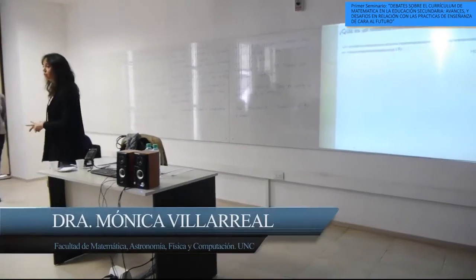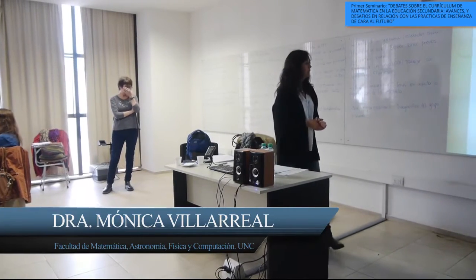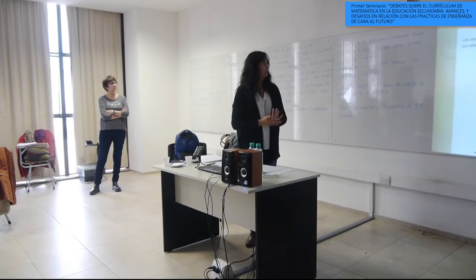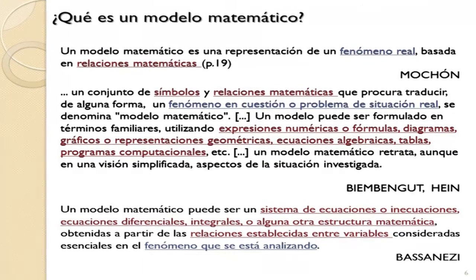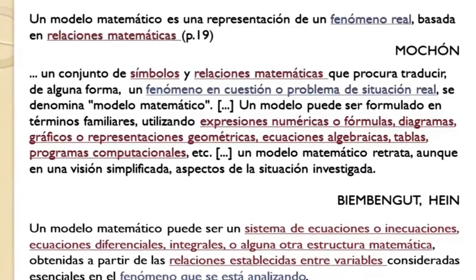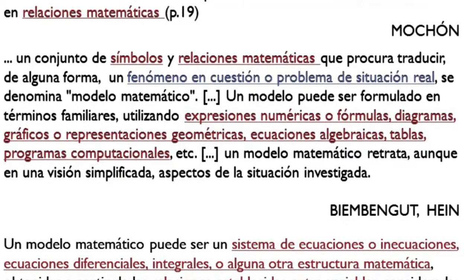Vamos a presentar tres definiciones y mirar cuáles son los elementos que aparecen. Una primera definición de Simón Moachón, autor mexicano, dice que un modelo matemático es una representación de un fenómeno real basada en relaciones matemáticas. La segunda definición, de dos educadores matemáticos brasileros, dice: un conjunto de símbolos y de relaciones matemáticas que procura traducir de alguna forma un fenómeno, cuestión o problema de situación real se denomina modelo matemático.